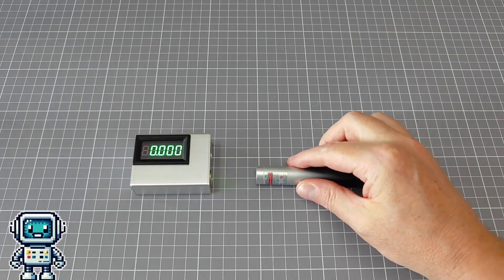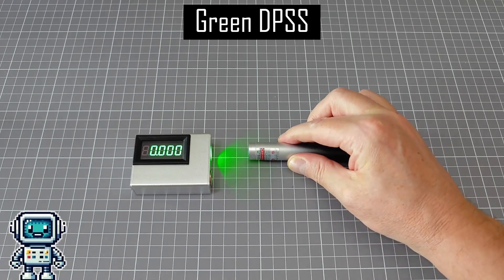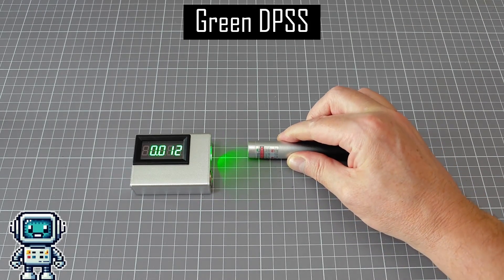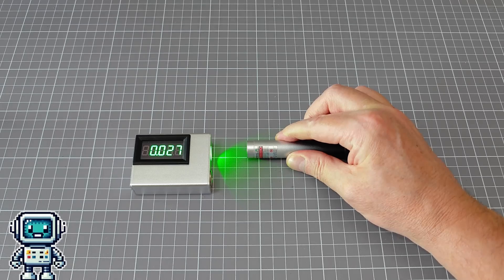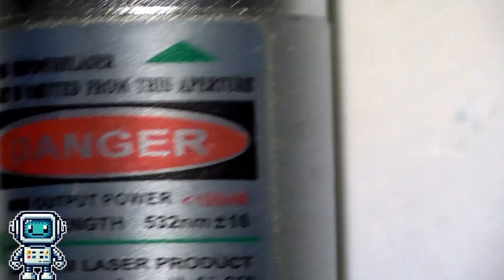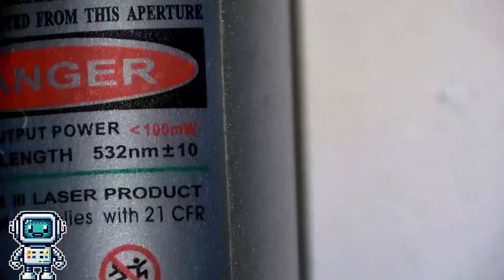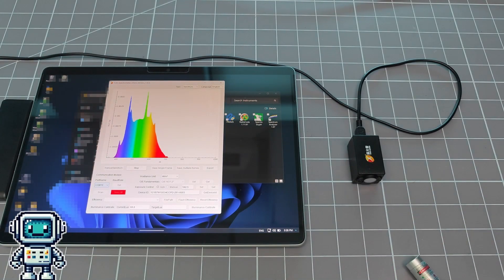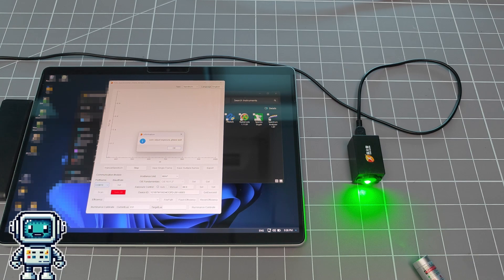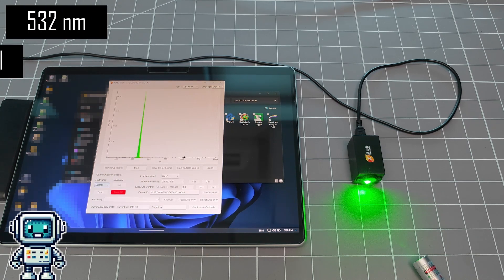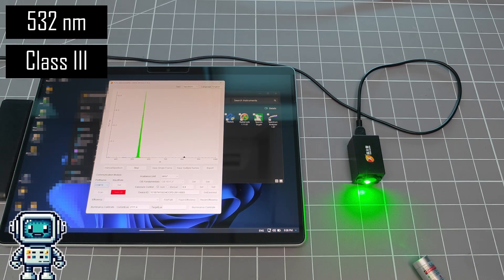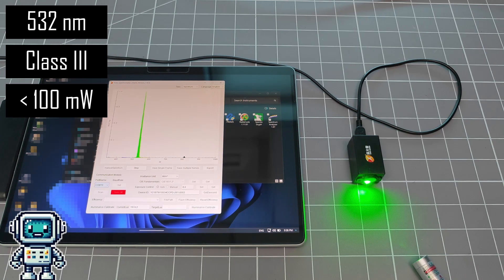This is a green diode-pumped solid-state laser. Like all of our lasers, it is very cheap and we need to treat what is written on the label as being a marketing statement instead of an actual specification. In this case, the label claims this is a 532 nanometers Class III laser with an output under 100 milliwatts. Let's see about that.